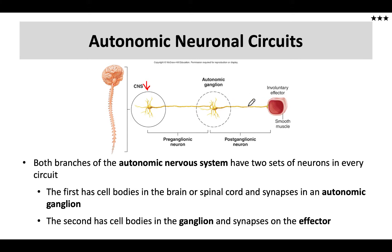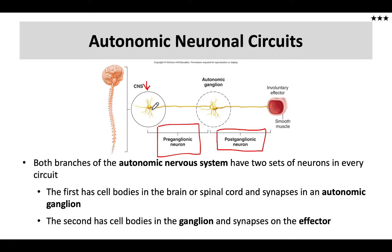This secondary neuron is called the postganglionic neuron. Postganglionic and preganglionic are the terms specific to the autonomic nervous system. The ganglion is a cluster of cell bodies as well as nerve terminals. In reality, the ganglion has quite a few other neuron cell bodies, dendrites, and nerve terminals housed within the same area. In the central nervous system, ganglia are called nuclei, but once we're out in the periphery they're called ganglia.